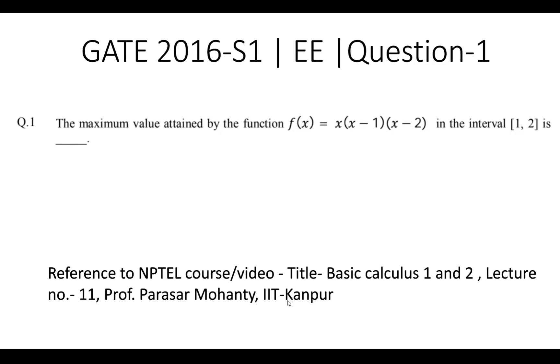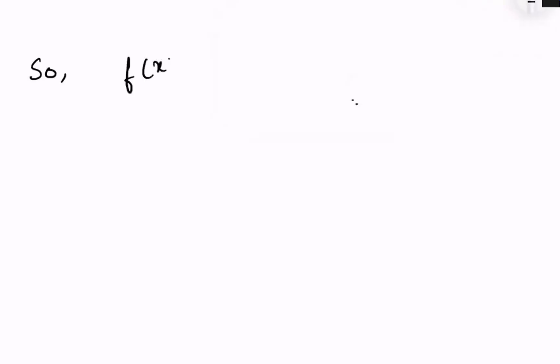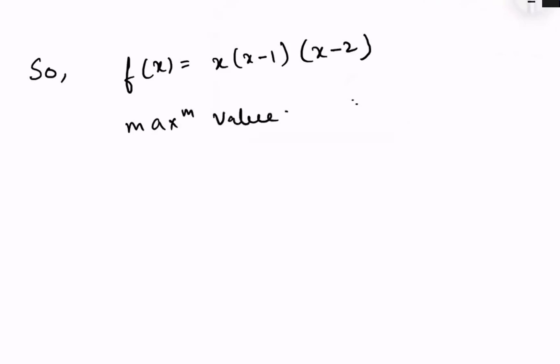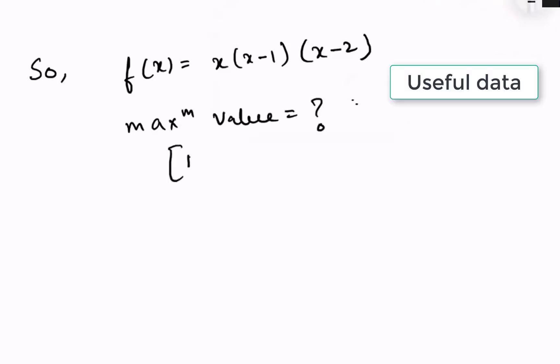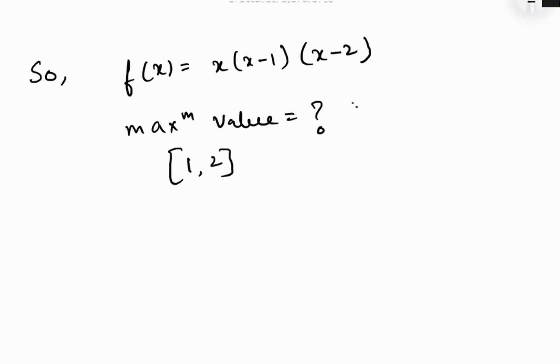Before solving the question, let's understand what it asks. The function f(x) equals x times (x minus 1) times (x minus 2), and we need to find the maximum value of f(x) for the interval 1 comma 2.